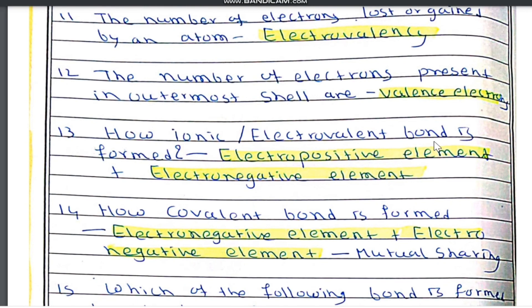The number of electrons present in the outermost shell of an atom are known as valence electrons. For example, sodium has one valence electron and chlorine has seven valence electrons. Question number 13: how is an ionic or electrovalent bond formed? It is formed by an electropositive element and an electronegative element.